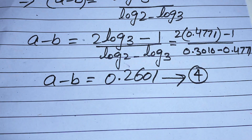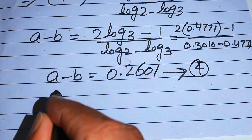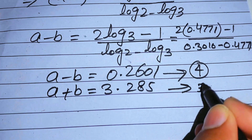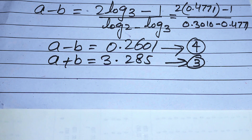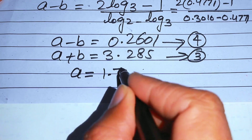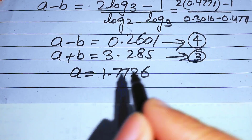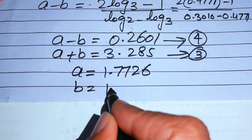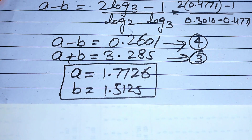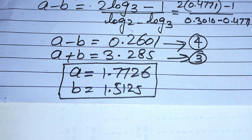We now have equation 3: a plus b equals 3.285, and equation 4: a minus b equals 0.2601. Adding these two equations gives a equals 1.7726. Subtracting gives b equals 1.5125. These are our final answers. Thank you so much for watching this video — please subscribe to my channel for more exciting videos.